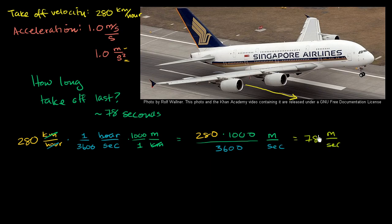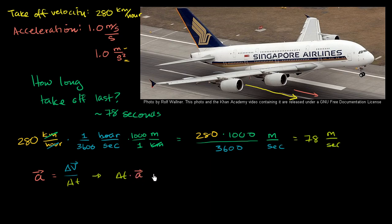Let's verify this using the definition of acceleration. Acceleration is equal to change in velocity over change in time. We want to solve for change in time, so multiply both sides by change in time: change in time times acceleration equals change in velocity. Then divide both sides by acceleration: change in time equals change in velocity divided by acceleration.